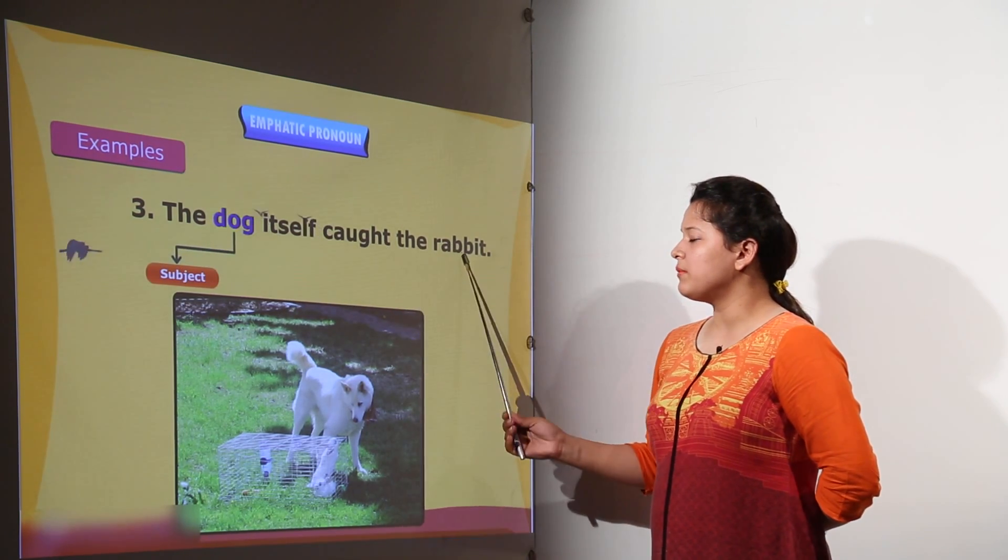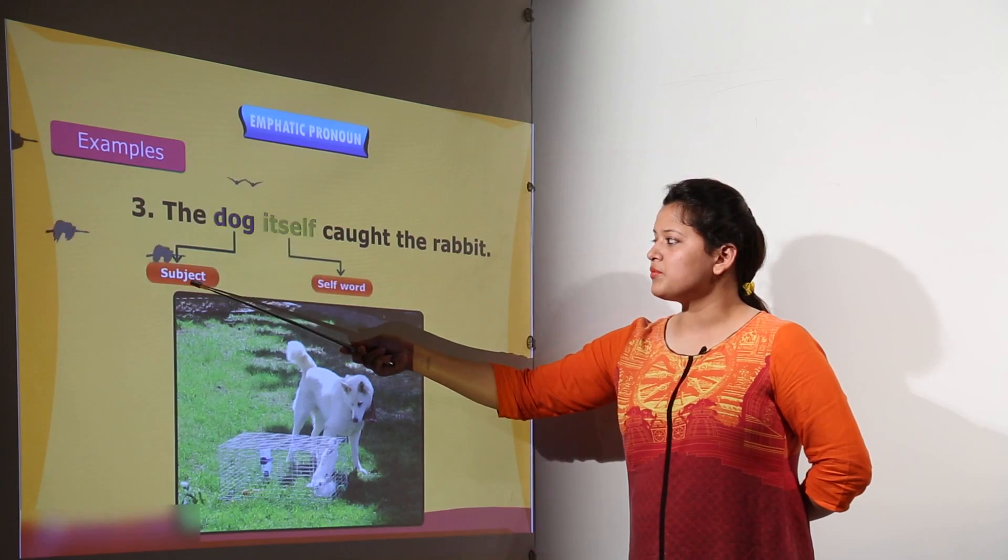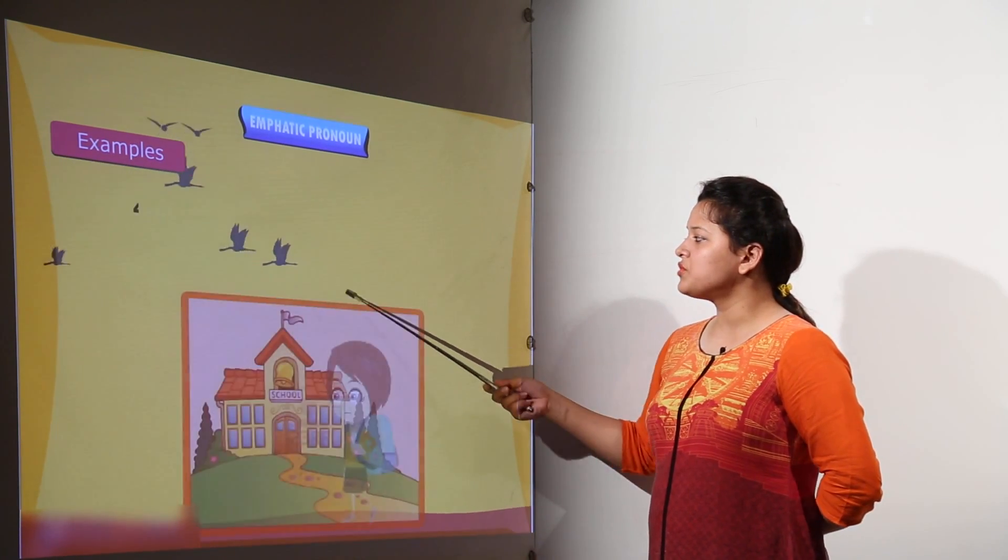The dog itself caught the rabbit. The dog here is the subject which is singular. So, we use here itself which is singular.